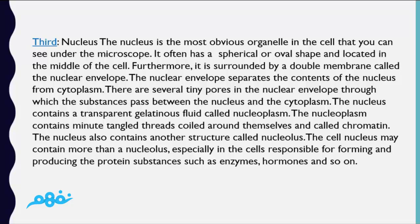The nucleoplasm contains many tangled threads coiled around themselves, called chromatin. The nucleus also contains another structure called the nucleolus. The cell nucleus may contain more than one nucleolus, especially in cells responsible for forming and producing protein substances such as enzymes, hormones, and so on.